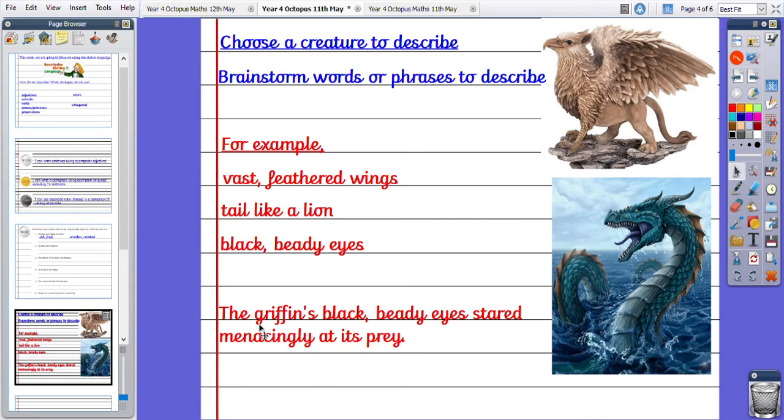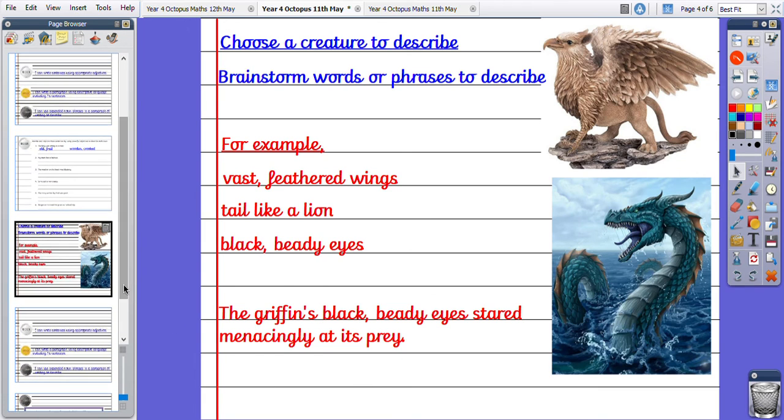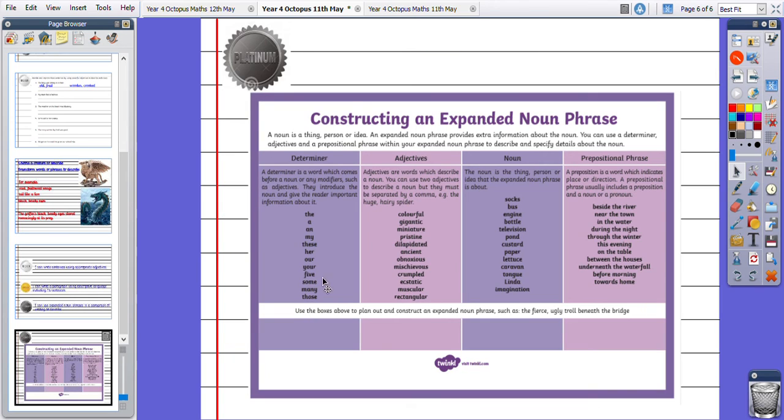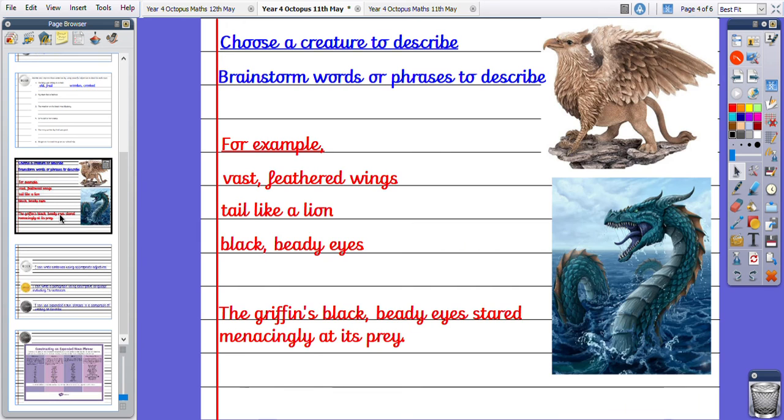So to achieve platinum today, I want you to write a paragraph of writing, including expanded noun phrases. I have popped in a prompt to help you at the end of the flip chart to help you write expanded noun phrases. And have a go at that.